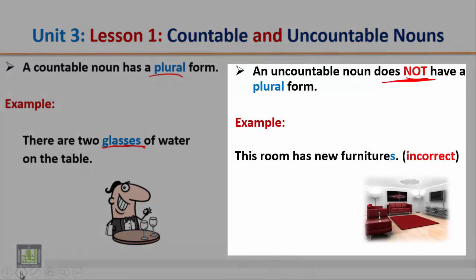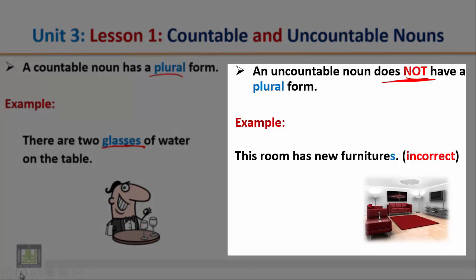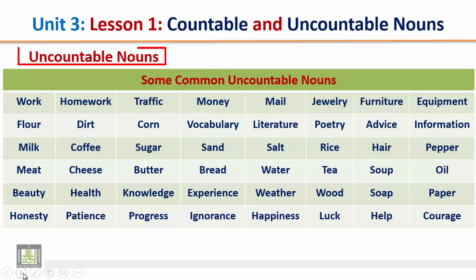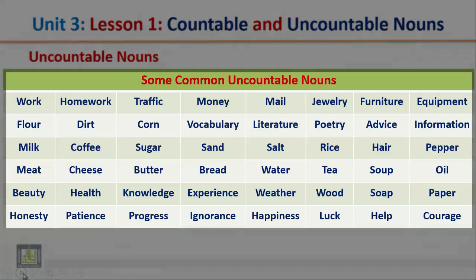Example: 'This room has new furnitures' — this sentence is incorrect because the word 'furniture' is an uncountable noun. It doesn't take the final 's,' so we have to remove the 's' from 'furniture.' Uncountable nouns don't have a plural form.